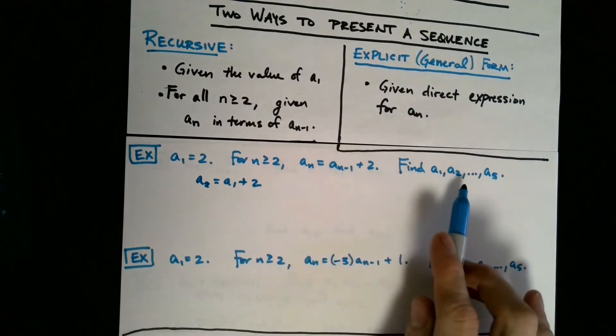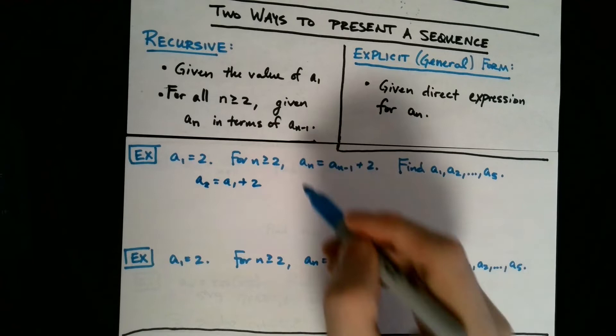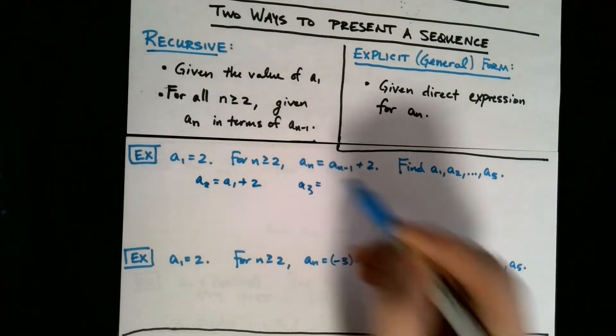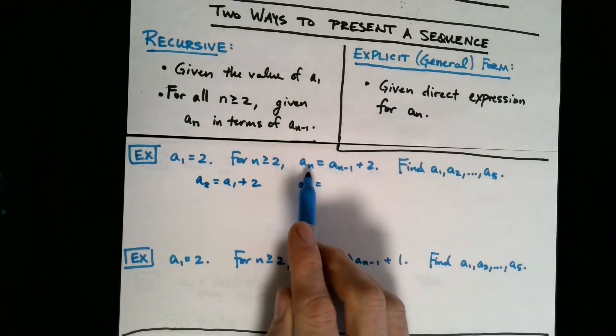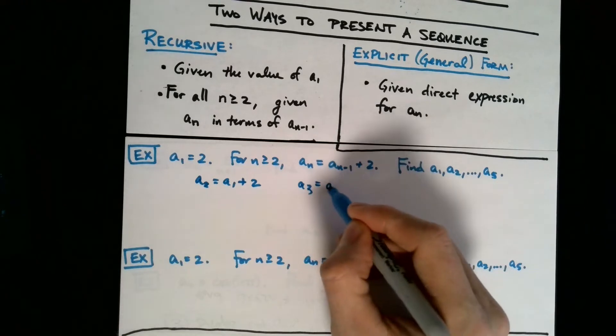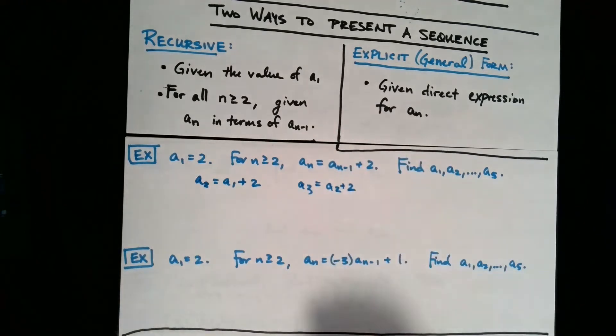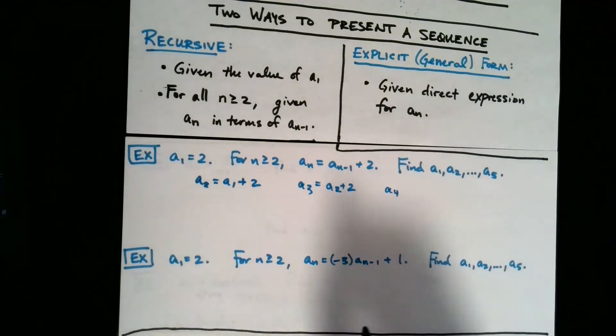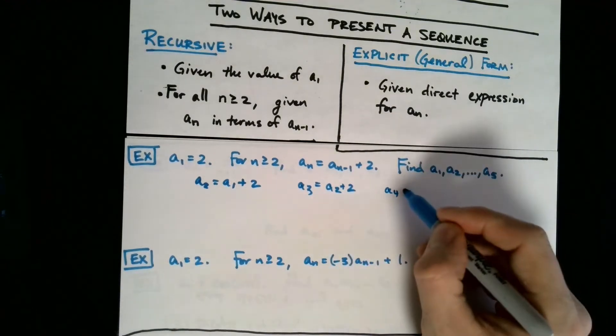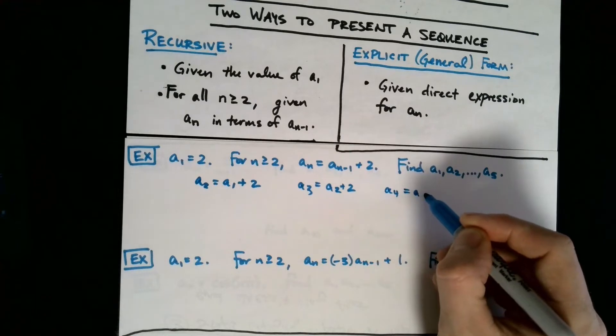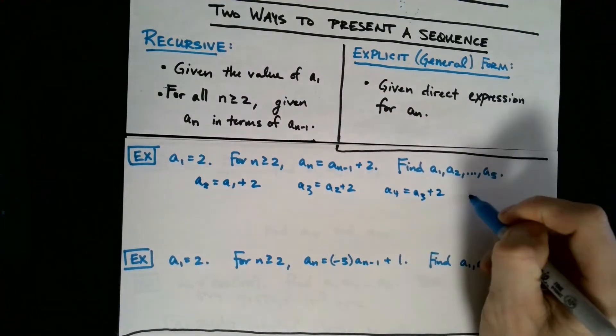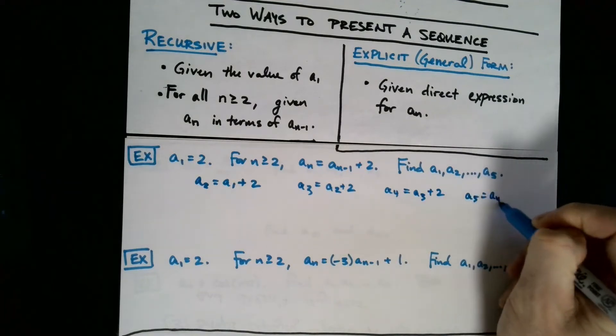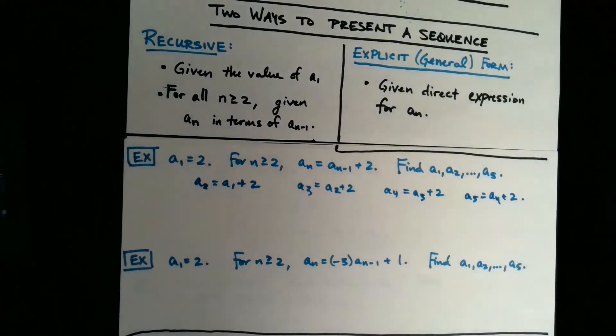And we can do this, because if we use our recursive definition, this recursive definition works for any n greater than or equal to 2. So in particular, it would work for 2. So if we let n be 2, our equation here would read a₂ equals a₁ plus 2. Similarly, because we got to find a₃, a₄, and a₅, we could do a₃ by letting n equal 3, and we would get a₃ equals a₂ plus 2. We also need to find a₄, so let's plug in n equals 4. We'll get a₄ equals a₃ plus 2. a₅, a₄ plus 2.